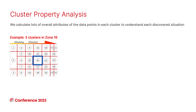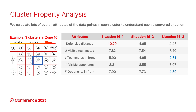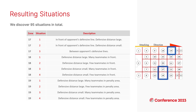For example, in zone 16, we calculate the average defensive distance and the average number of players in the frame. We find that in the first situation, the defensive distance is large, whereas in the other two situations the defensive distance is small. Moreover, in the third situation there are few teammates in front of the on-ball player, whereas in the second situation there are more teammates in front of the on-ball player. By doing this for every resulting cluster, we give a textual description for each resulting cluster. We have in total 95 situations. Here are the situations from zone 17 to zone 19, with descriptions like possessing the ball between the opponent's defensive lines, or when the defensive distance is large, or when there are many teammates in the penalty area.